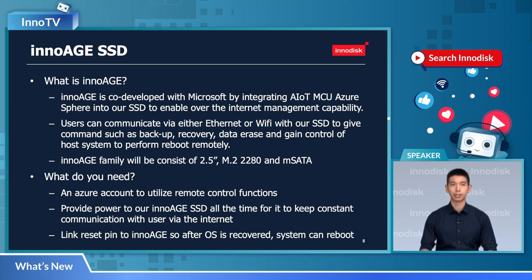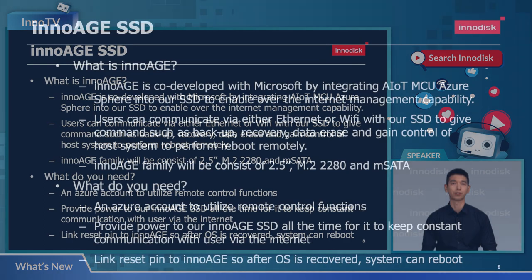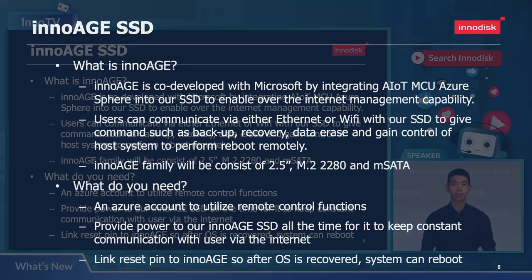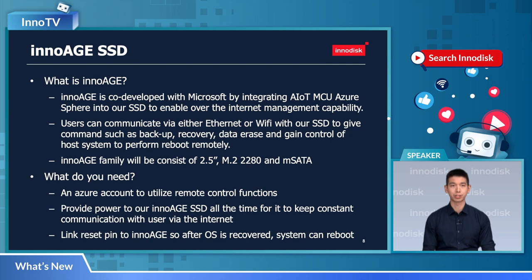The InnoH family will initially consist of 2.5-inch SSD, M.2 2280, and mSATA in the first batch. To use InnoH SSD, an active Azure account is needed to utilize remote management features. Also, the disk will need constant power from the system so that InnoH stays alive, stays awake, and maintains a constant connection via the internet.